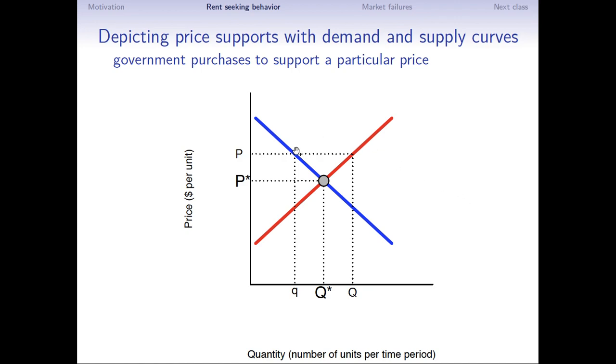Price supports are a different program. If we want to hit our target price, the other thing we could do is have the government become a purchaser of this commodity. So at price P, consumers will consume Q. Producers will want to produce capital Q. There is excess supply. Normally, that would bid the price down, but the government can come in and purchase that excess supply. In effect, sort of creating an artificial demand for this commodity to sustain the price P. Okay.